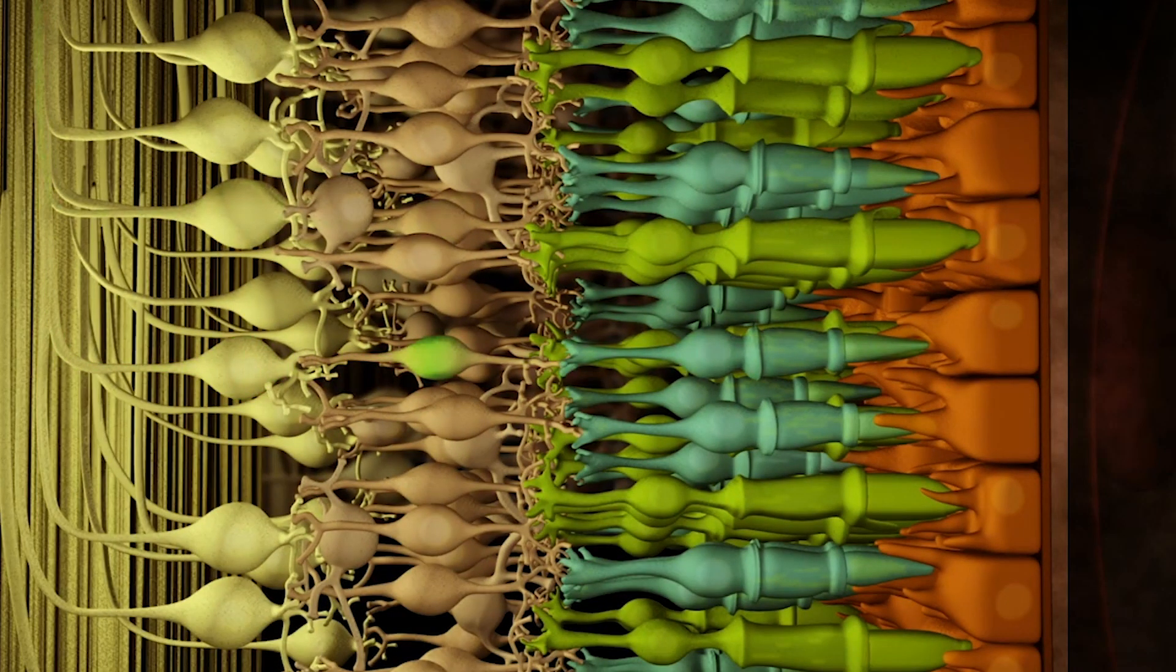Light-sensitive retina contains cells called rod and cone cells. Pigments in rod and cone cells convert light rays into nerve impulses.